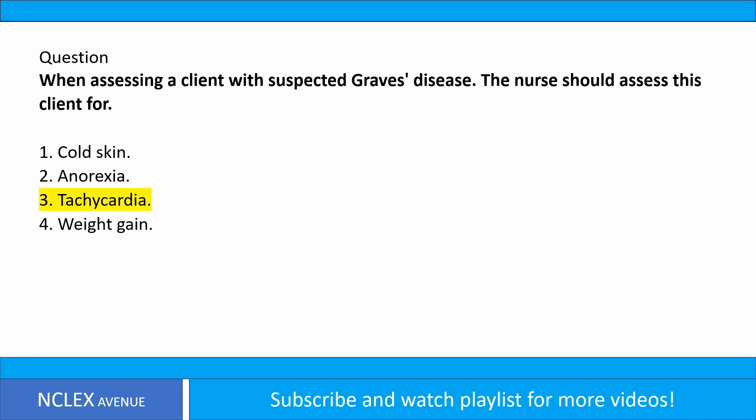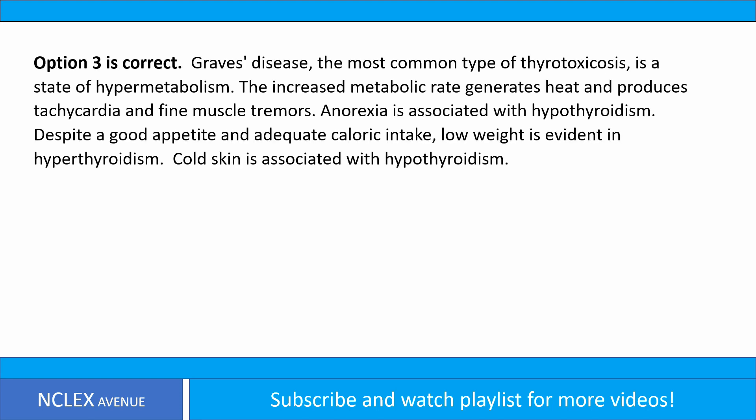Option 3 is correct. Graves' disease, the most common type of thyrotoxicosis, is a state of hypermetabolism. The increased metabolic rate generates heat and produces tachycardia and fine muscle tremors. Anorexia is associated with hypothyroidism. Despite a good appetite and adequate caloric intake, low weight is evident in hyperthyroidism. Cold skin is also associated with hypothyroidism.